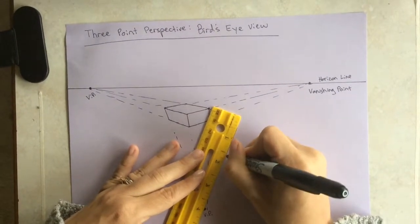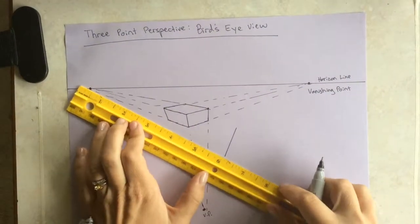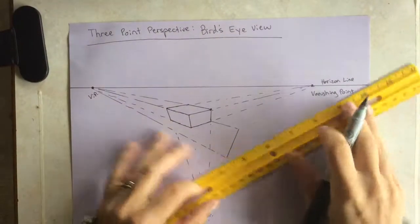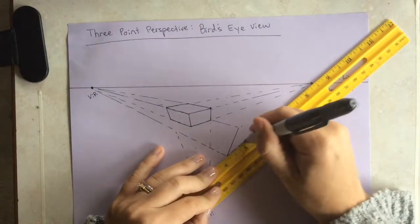Okay, I'll show you again. First you start with a line that connects to the bottom vanishing point. Then you connect each side of the line to each vanishing point on the sides.